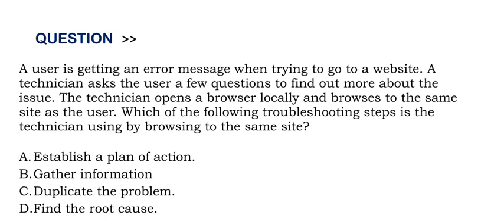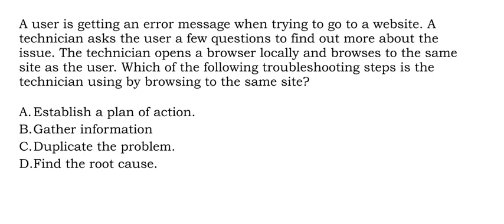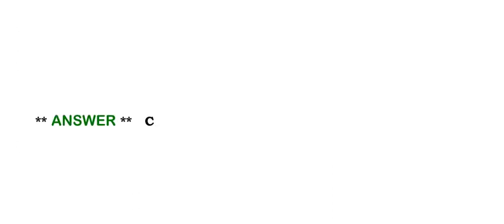Which of the following troubleshooting steps is the technician using by browsing to the same site? Option A: Establish a plan of action. Option B: Gather information. Option C: Duplicate the problem. Option D: Find the root cause. The correct answer is Option C.